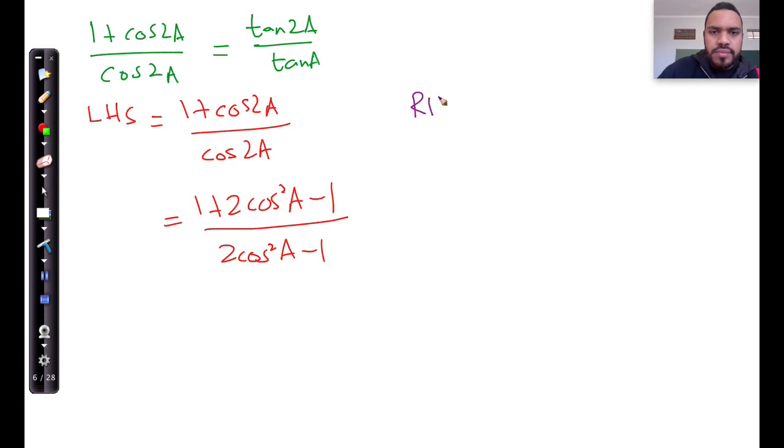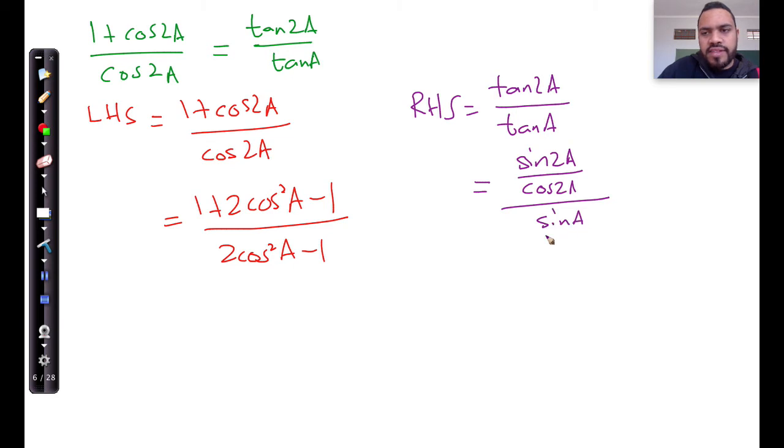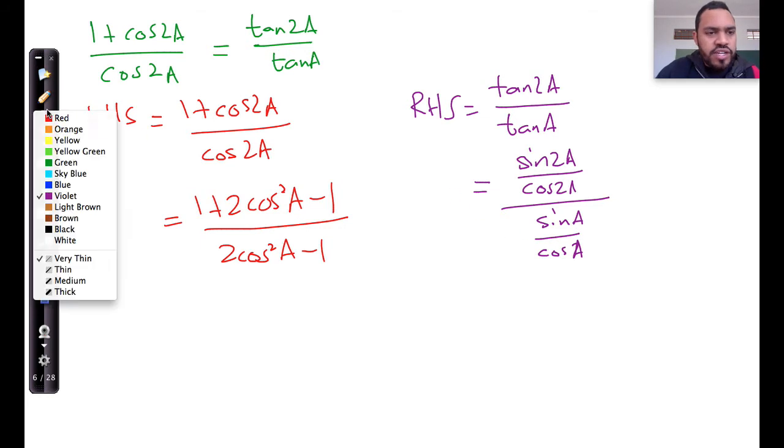And that must be equal to tan of 2a, divided by tan of a. And I've got an identity for that. That's going to be sin of 2a divided by cos of 2a, and that's the numerator that I see on top, all over sin of a divided by cos of a. Now, that's a fraction, and as you know, the fraction I can tip in times.